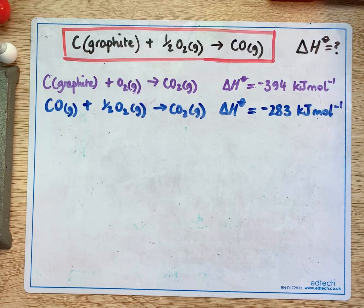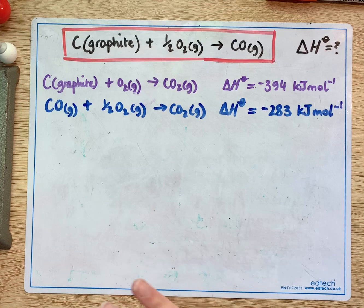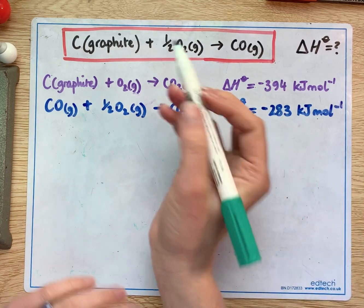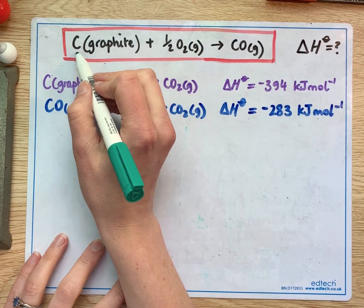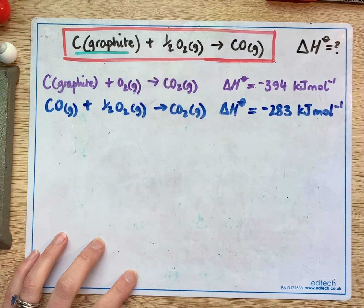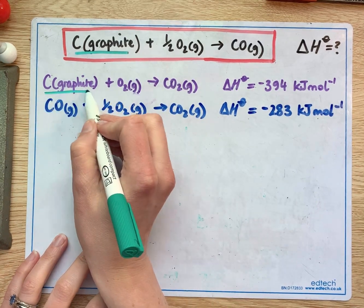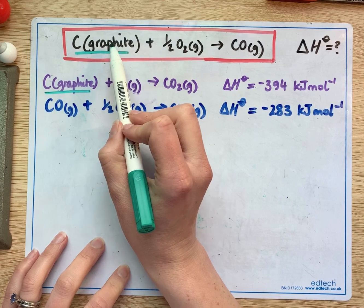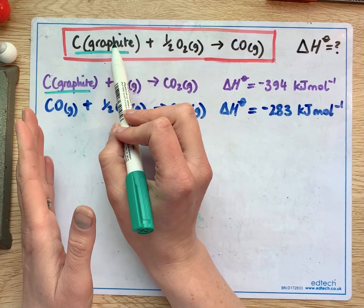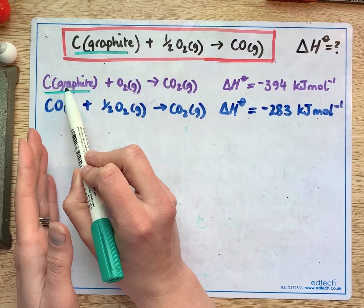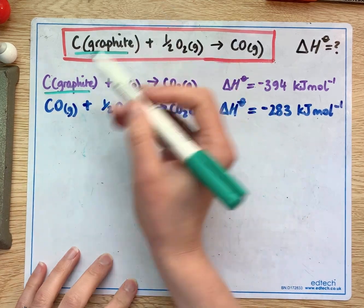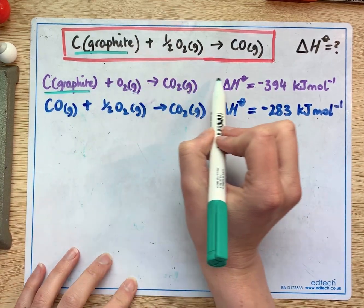So what we're looking at first of all is identifying where we've got the reactants. I'm looking for the graphite. That's in this equation here. So what I can see is this is a reactant, it's on the left side of my equation and it is in this equation as well. So I'm going to use this equation in this forward direction as it's written.